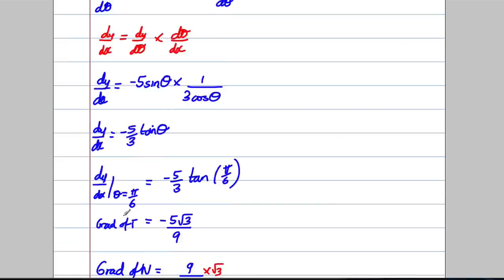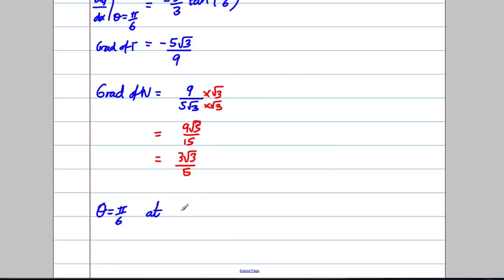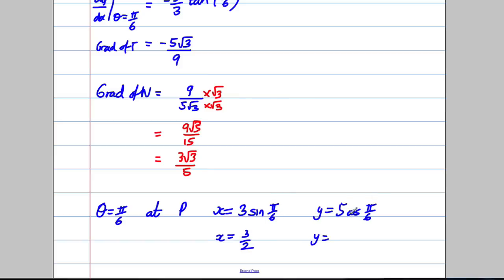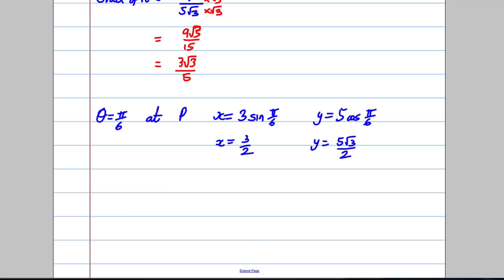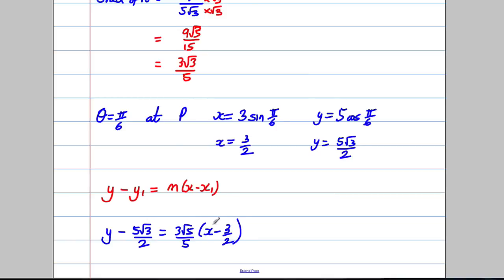Now find the coordinates of point P when θ = π/6. x = 3sin(π/6) = 3 × (1/2) = 3/2. y = 5cos(π/6) = 5 × (√3/2) = 5√3/2. Now we're ready to write the equation of the normal using y − y₁ = m(x − x₁): y − 5√3/2 = (3√3/5)(x − 3/2).